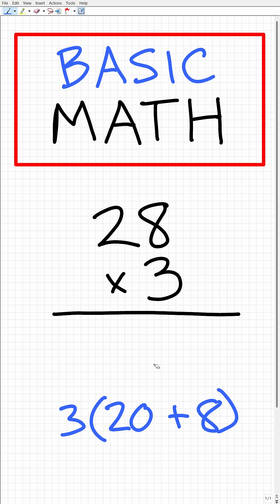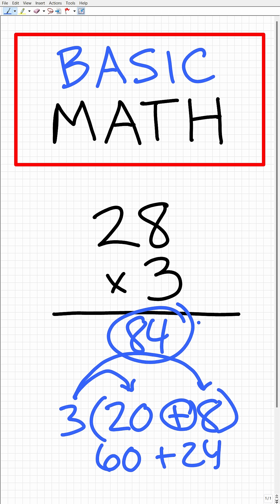All right, so now what we can do using the distributive property is to take this three and multiply it by 20. And then we're going to take this three and multiply it by eight and then add up the results of doing that. So three times 20 is 60. And then three times eight is 24. 60 plus 24 is in fact 84, which is the correct answer.